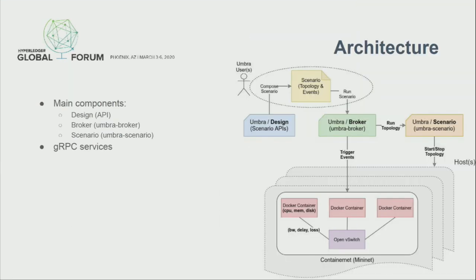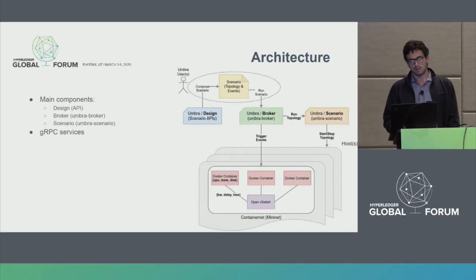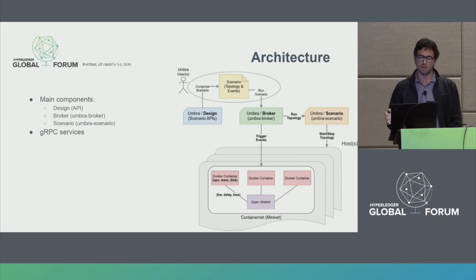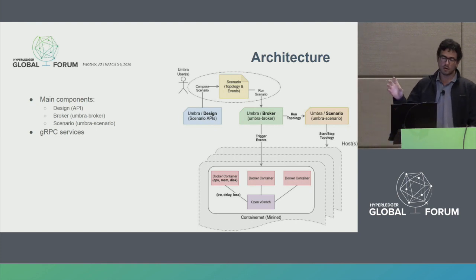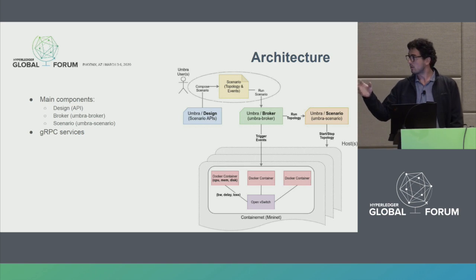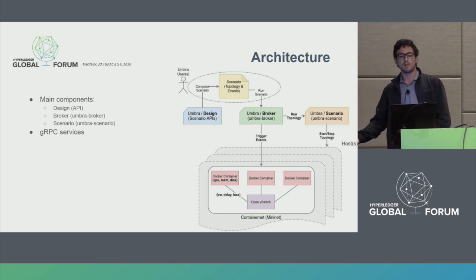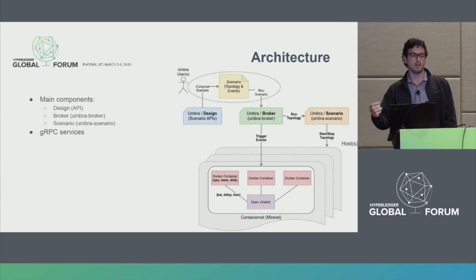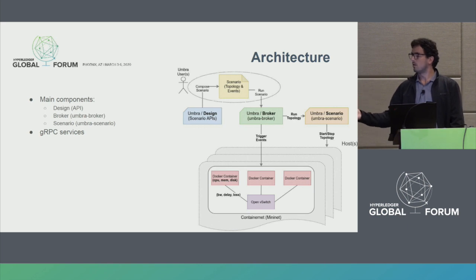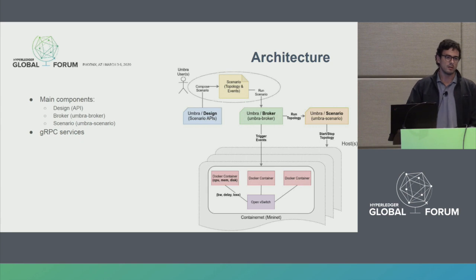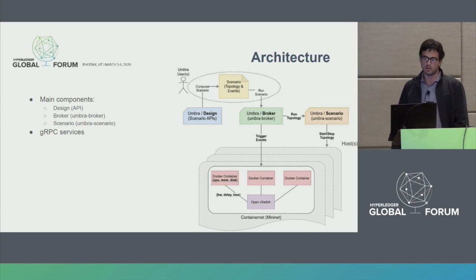Here's the basic architecture of Umbra. There's a Design API — the blue component — that defines APIs abstracting a configuration file. A user grabs these APIs, composes a scenario consisting of a topology and events, and runs the scenario using the Umbra broker, the green component. The Umbra broker interacts with another component called Umbra Scenario, which deploys the actual topology — containers with blockchain nodes and links interconnecting them. The broker then realizes the events in that topology, for example calling chain codes to be invoked and deployed.